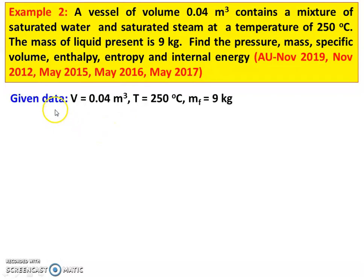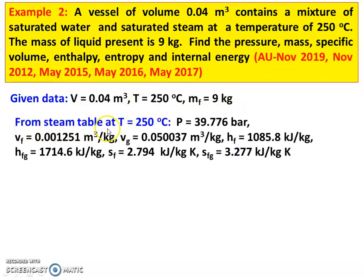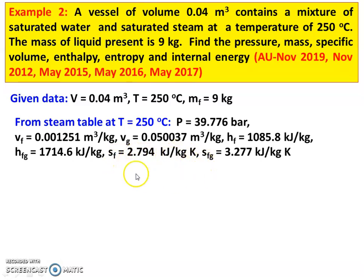Given data: volume = 0.04 m³; temperature = 250°C; mass of liquid MF = 9 kg. From the steam table, Table 1 — saturated water table with respect to temperature at 250°C: pressure = 39.776 bar; VF = 0.001251 m³/kg; VG = 0.050037 m³/kg; HF = 1085.8 kJ/kg; HFG = 1714.6 kJ/kg; SF = 2.794 kJ/kg·K; SFG = 3.277 kJ/kg·K.